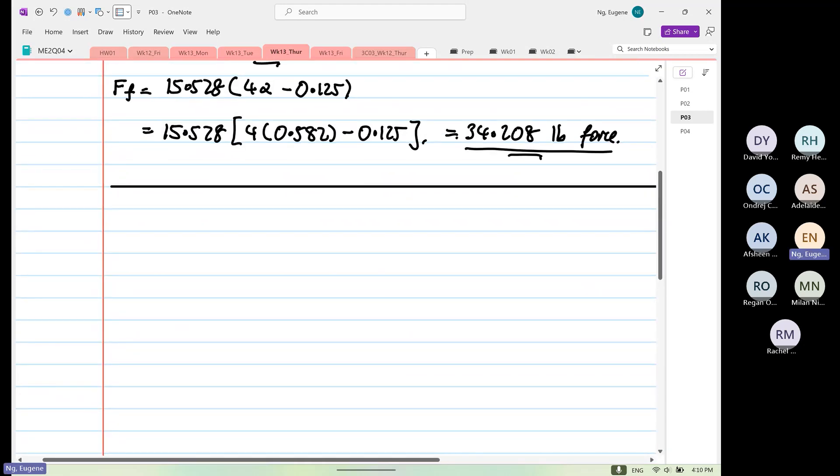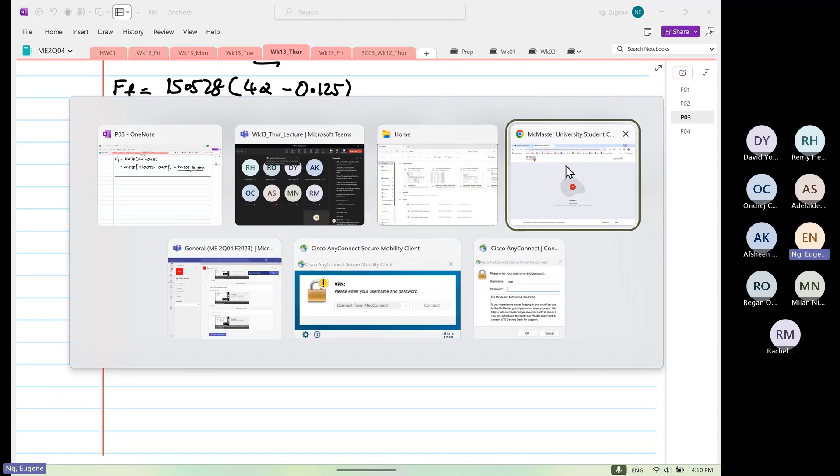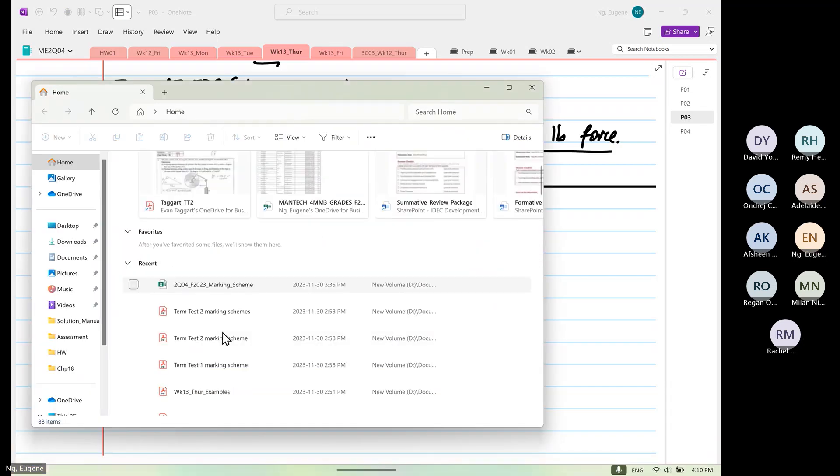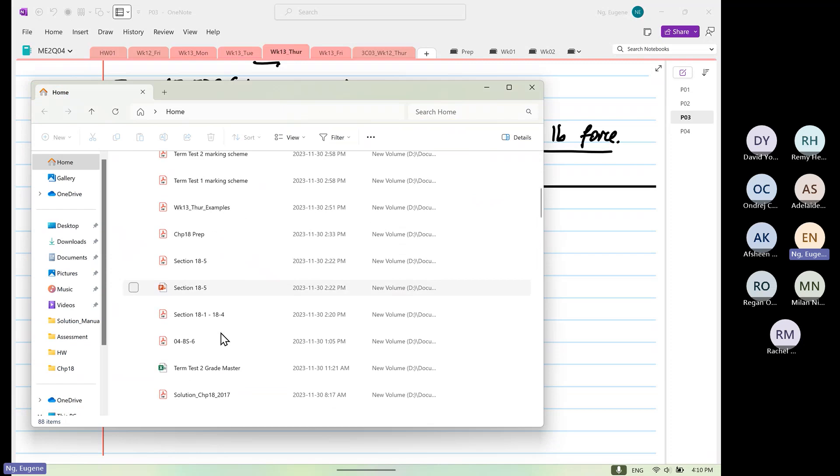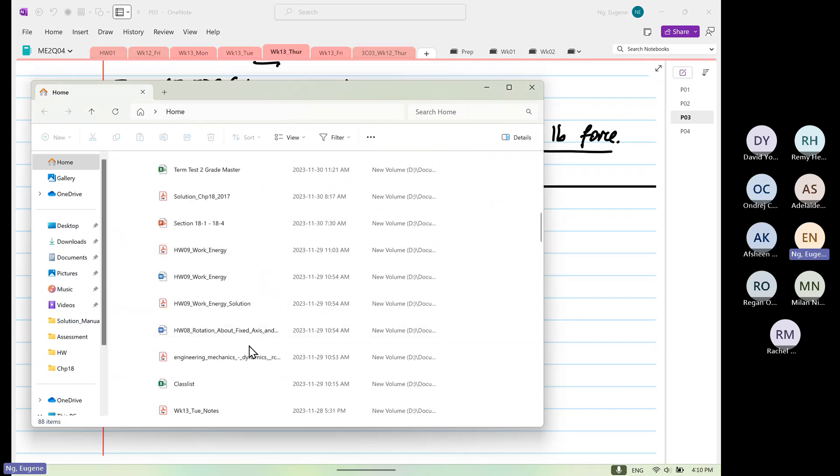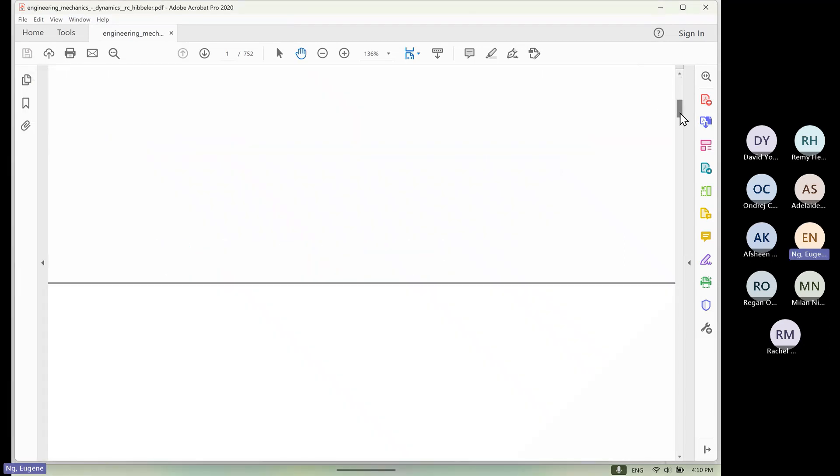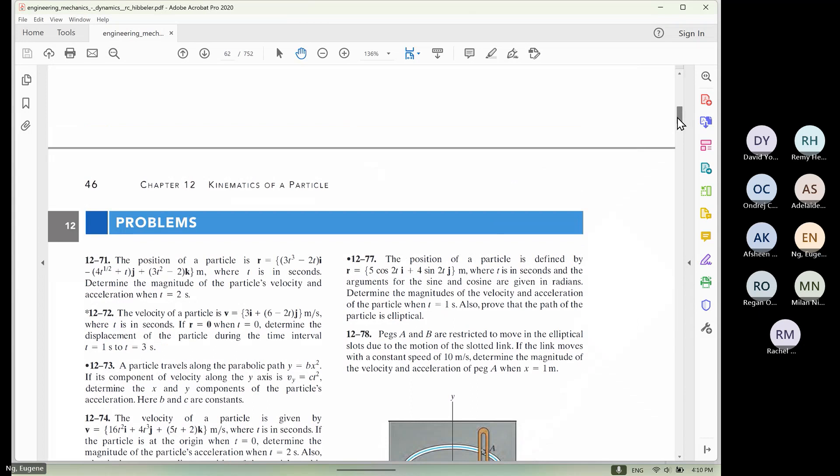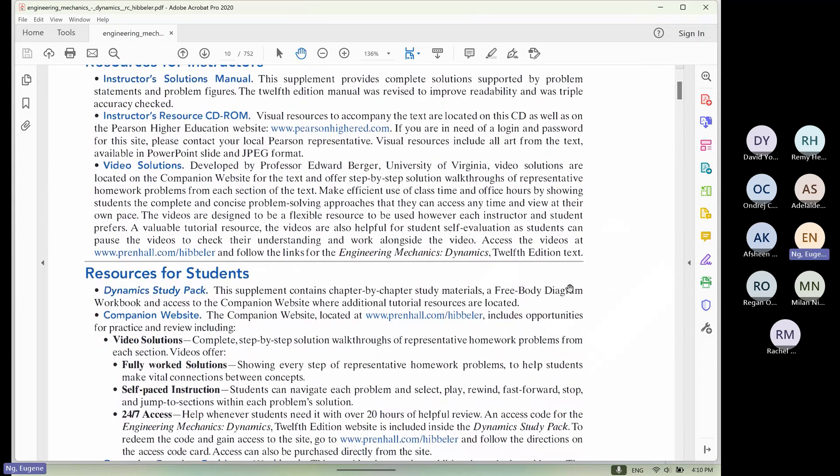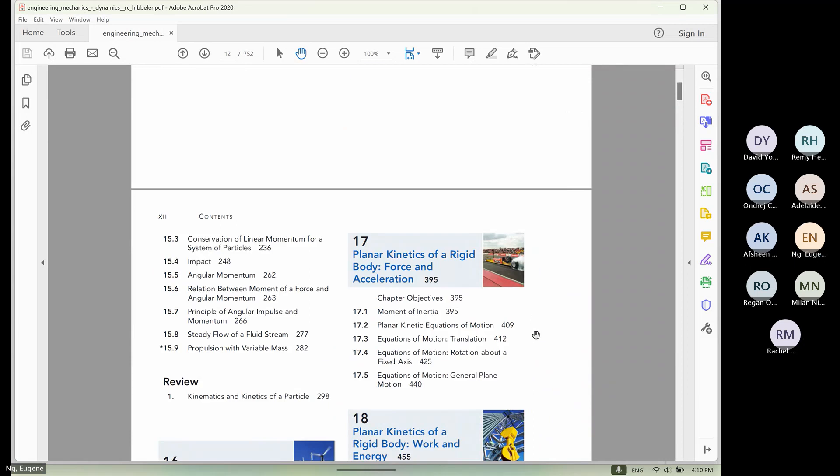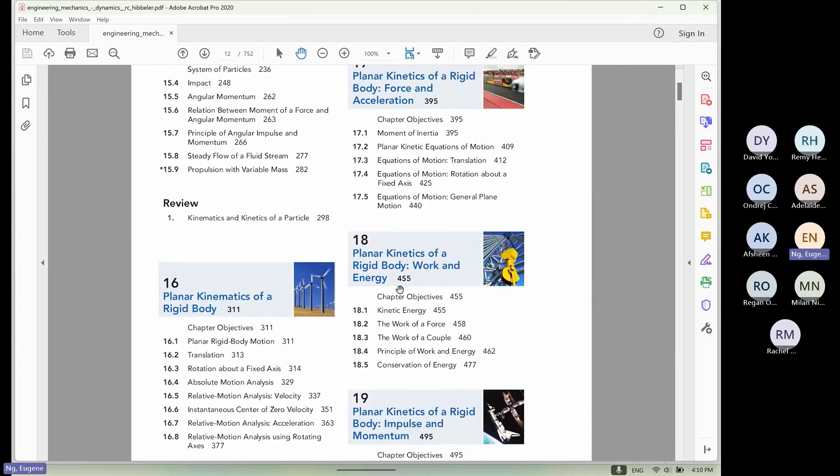So now we are going to go into a new topic and if we look into our textbook, where's our textbook? So if you look at our textbook, I have to be careful that I don't open the exam. That will be so funny. So our last topic will be known as chapter 18, work and energy.